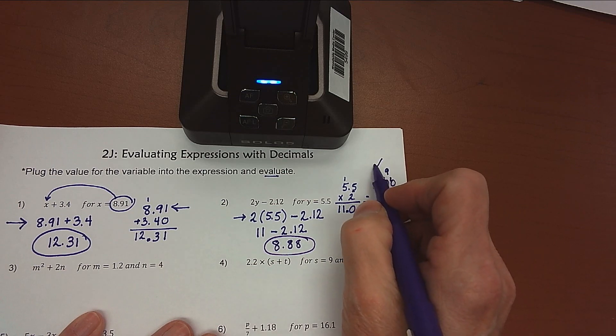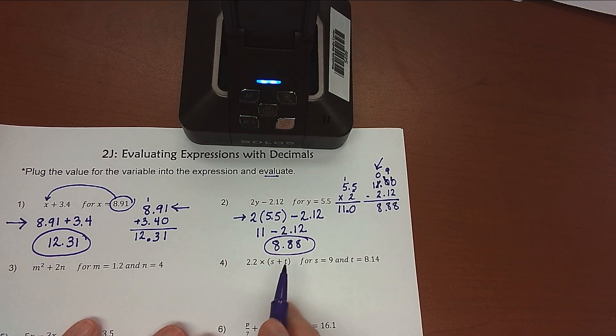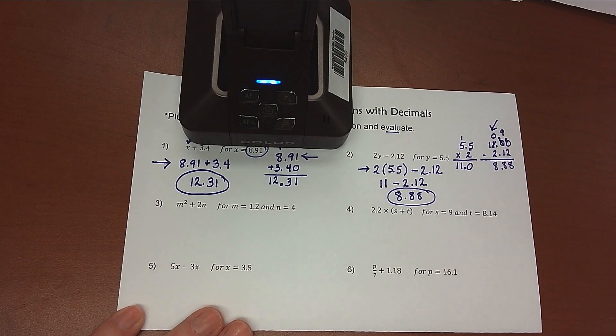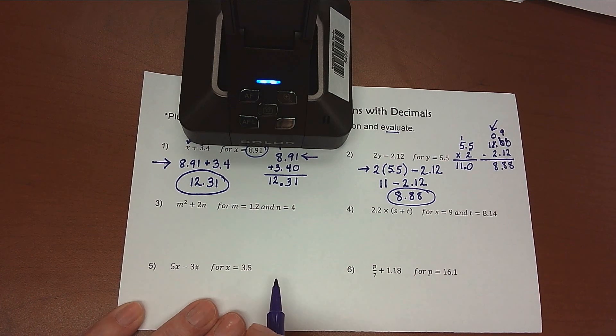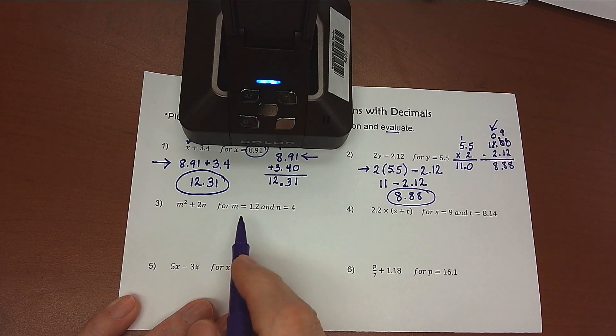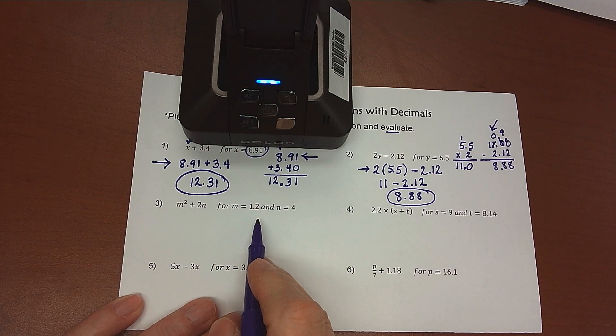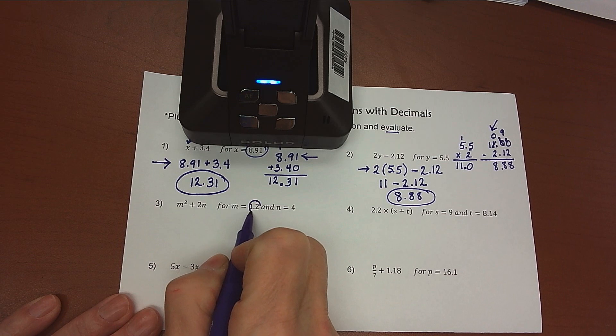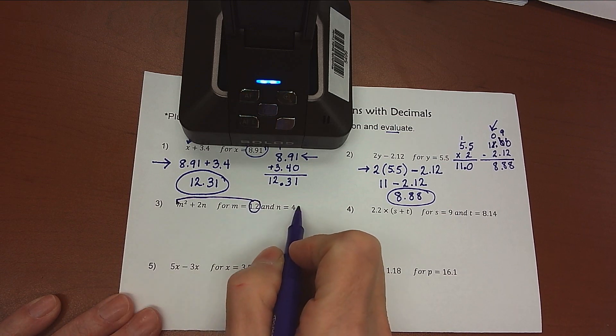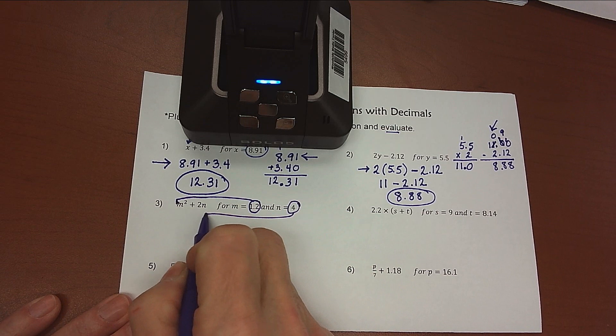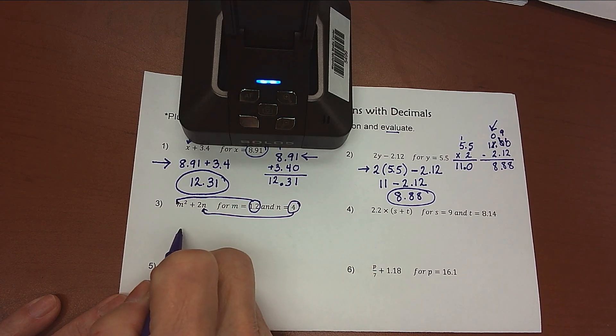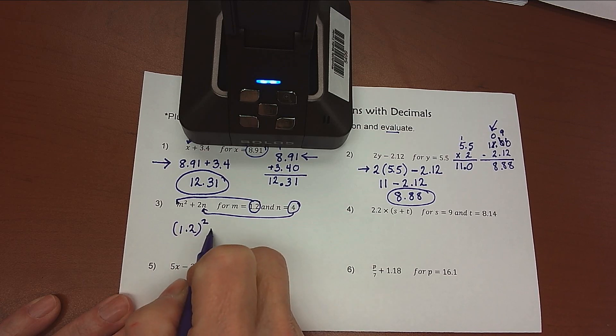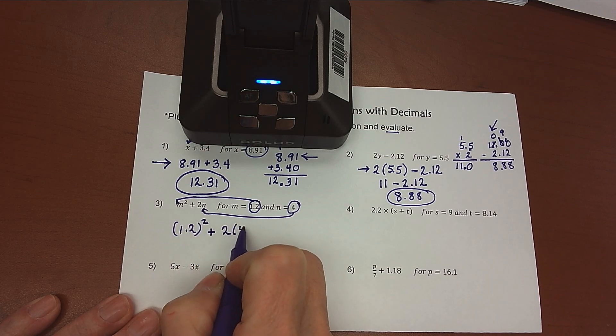And so I've shown my work, and I've shown my substitution, and I have my answer. All right, let's look at one where we have two variables that we're replacing. So if we look at this next one, we've got m squared plus 2n. And the m is going to be 1.2, and the n is going to be 4. So I substitute my 1.2 in for my m, and my 4 in for my n. So I'm going to take 1.2, and we'll square that. And then to that, we're going to add 2 times 4.